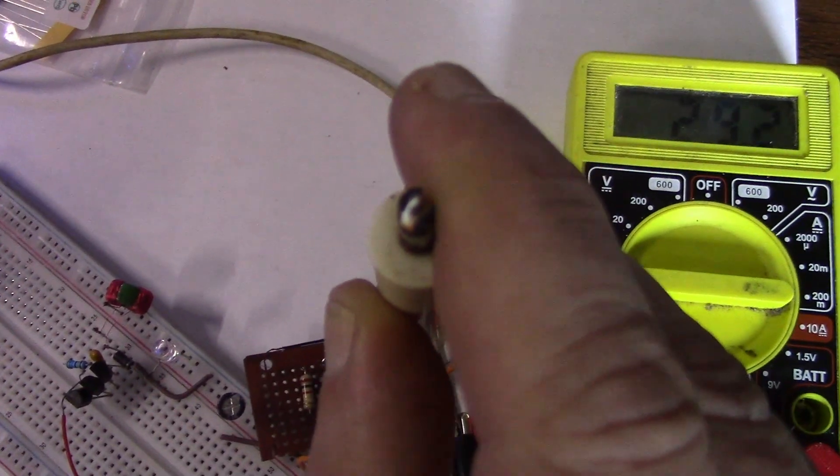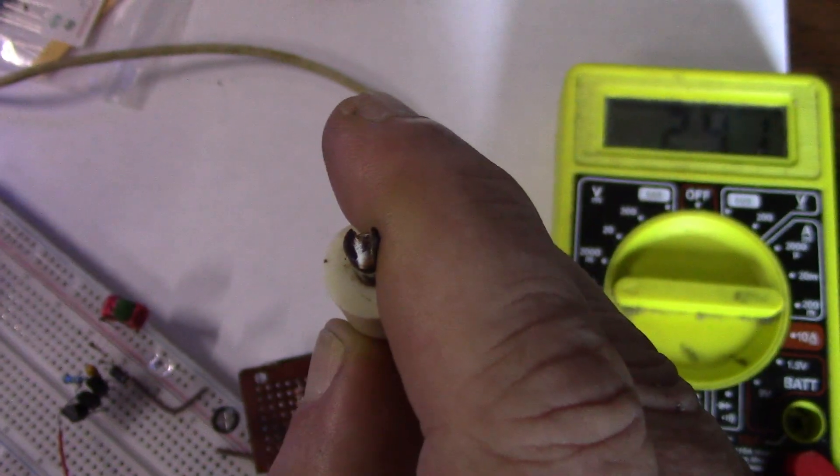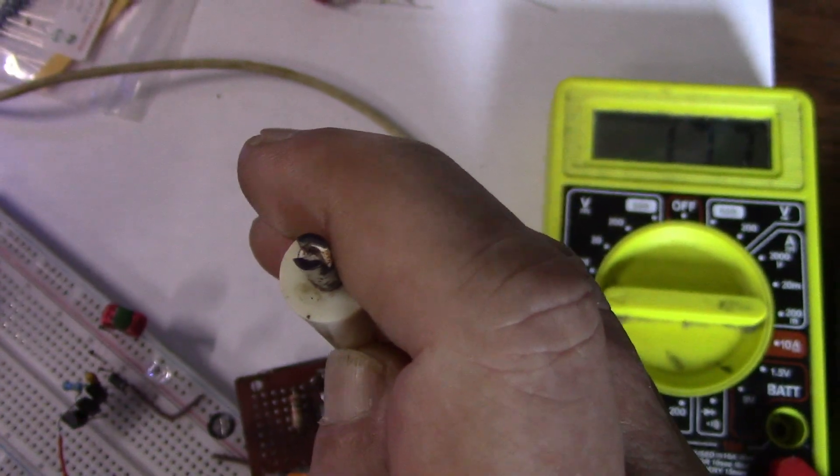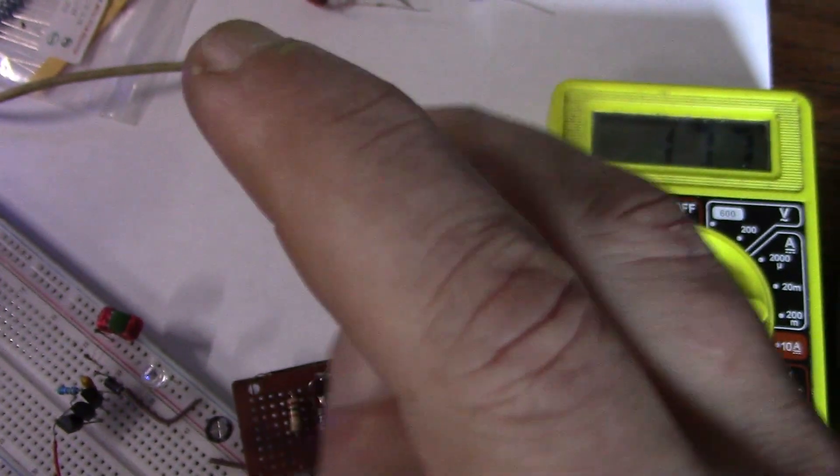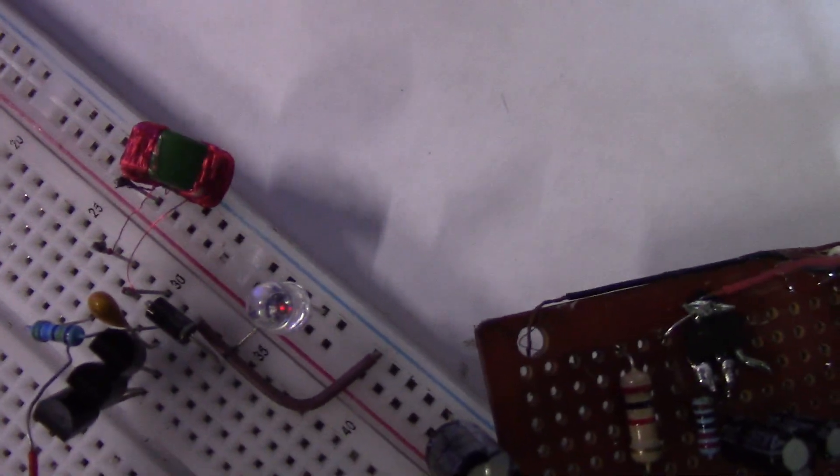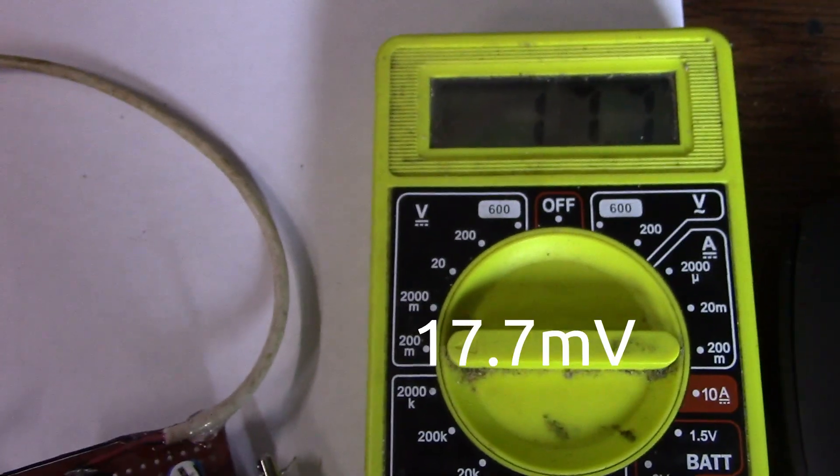If I take this all the way to the left, what in the world are we looking at there? That's physically as far as that pot will go. The light is very slightly on. 17.7 millivolts.